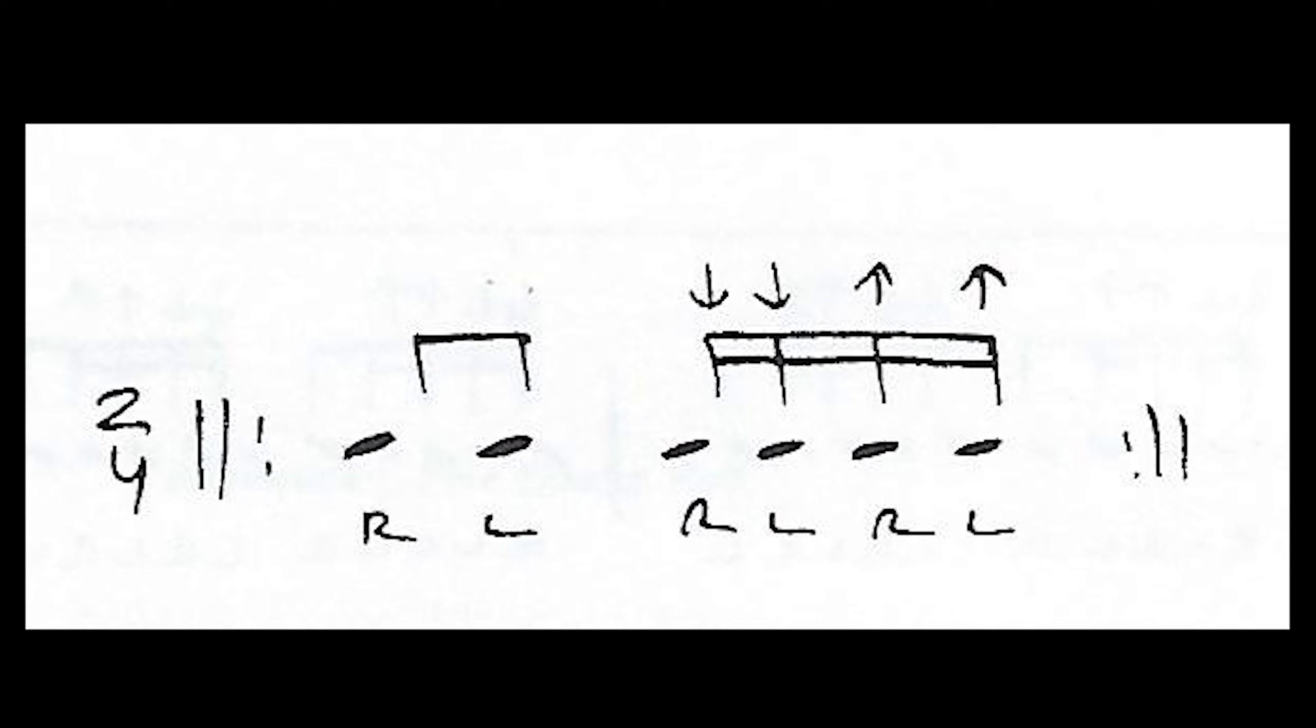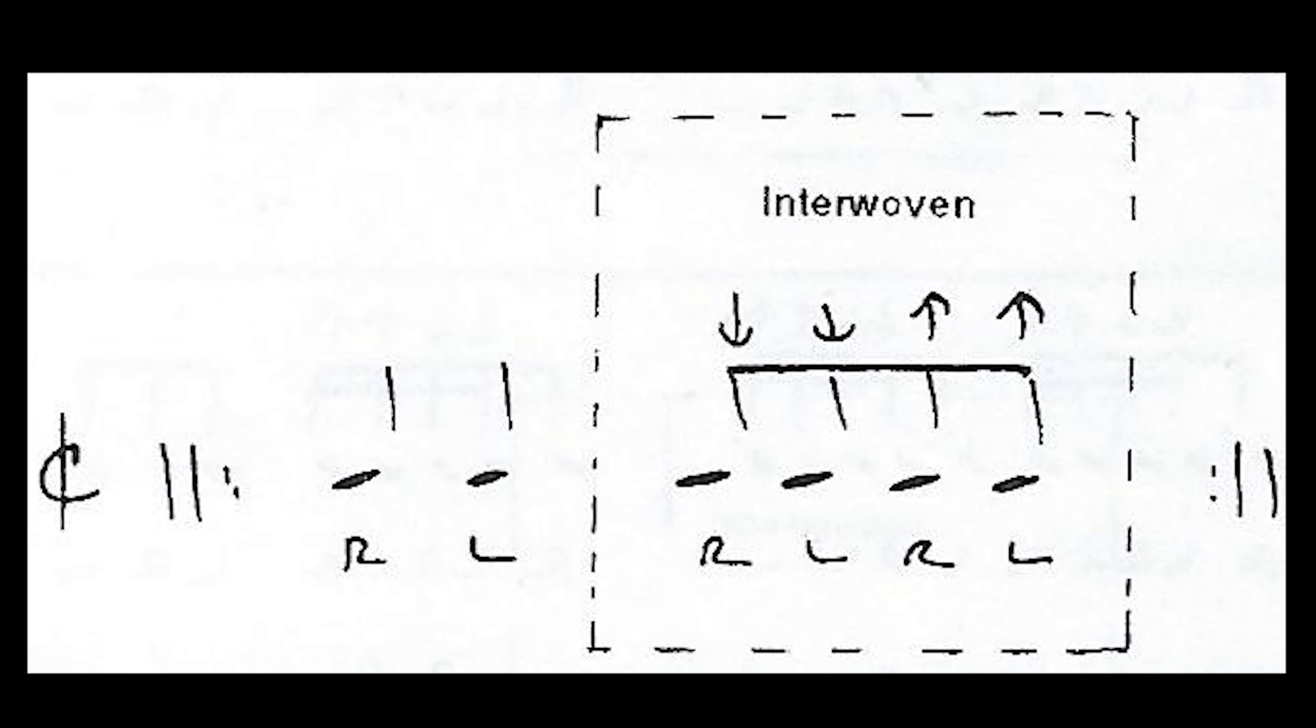But for now let's look at how the singled six is written. The standard notation for the singled six is written in two four where slow motion notation is written in half time.